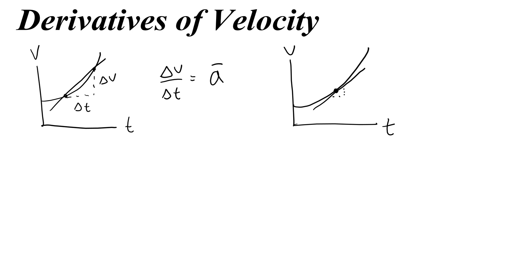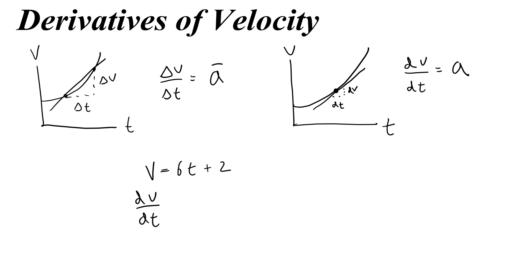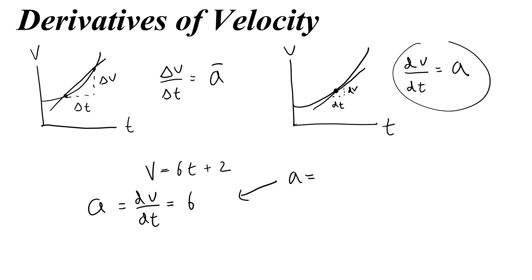You would draw a tangent line at that point and find its slope. The change in v is so small we use little dv because it's infinitely small, and the change in t is so small we use little dt. So we write dv over dt equals a — the acceleration is the derivative of velocity with respect to time. From the last problem, our velocity equation v equals 6t plus 2 has derivative dv/dt equal to just 6, so the acceleration is 6 at any moment.